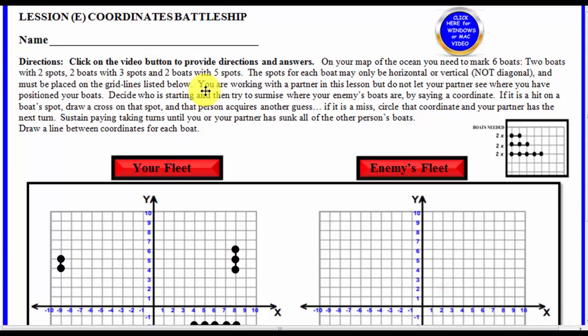Now, you are working with a partner in this lesson, as we said, but do not let your partner see where you have positioned your boats. Decide who is starting, and then try to surmise where your enemy's boats are by saying a coordinate. If it is a hit on a boat's spot, draw in a cross on that spot, and that person acquires another guess.